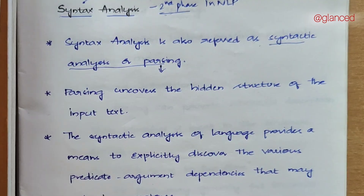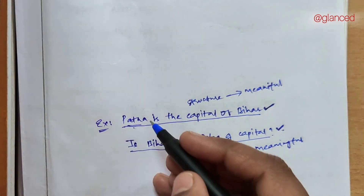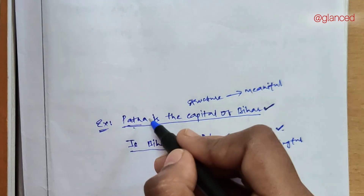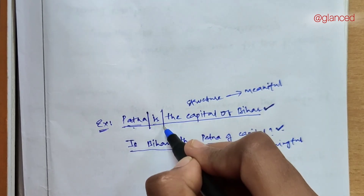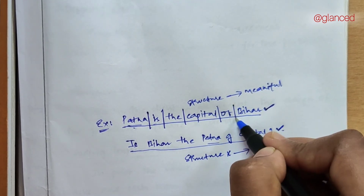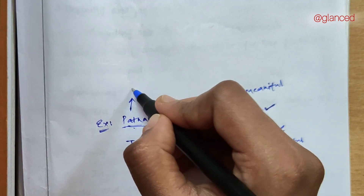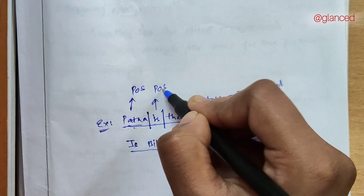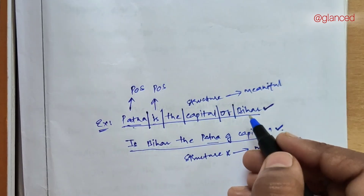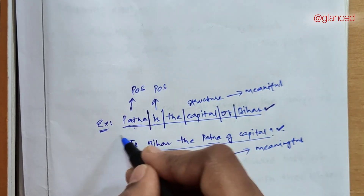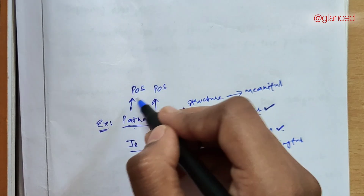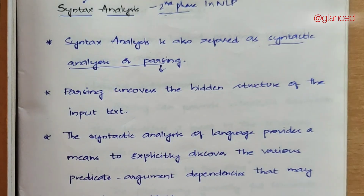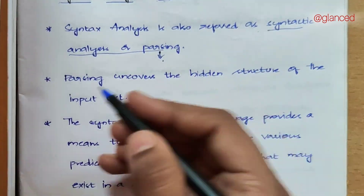So what is meant by parsing? Taking the previous example sentence, I am dividing that sentence into individual words and tagging each word with its part of speech. That is nothing but parsing. Parsing is dividing a particular sentence into words and tagging each with its part of speech in order to know the structure of that sentence.